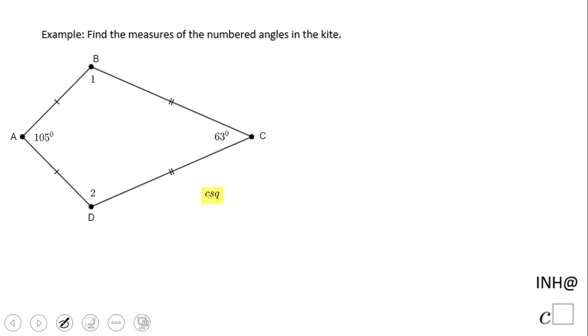Welcome or welcome back to I Need Help at C Squared. In this example we have a kite and we need to find these two angles, angle 1 and angle 2. If you notice, a kite has two consecutive sides congruent.